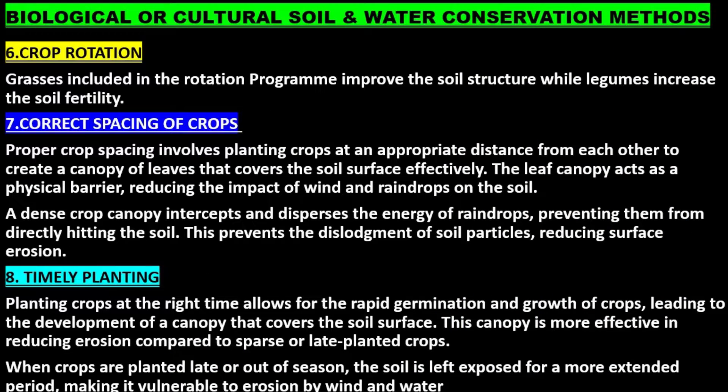Crop rotation: grasses included in a rotation program improve the soil structure, while legumes increase soil fertility. Correct spacing of crops involves planting crops at an appropriate distance to create a canopy of leaves that covers the soil surface effectively. The leaf canopy acts as a physical barrier reducing the impact of wind and raindrops, intercepting and dispersing the energy of raindrops to prevent dislodgment of soil particles.